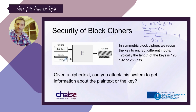We call these block ciphers. This type of cipher system receives the plain text — say 128 bits — receives a key, and produces a cipher text of the same size as the plain text. The key in this case can be 128 or 256 bits. There are systems that can have bigger key sizes. The plain text and cipher text must have the same size, but the key could be bigger — for example, 256 bits.